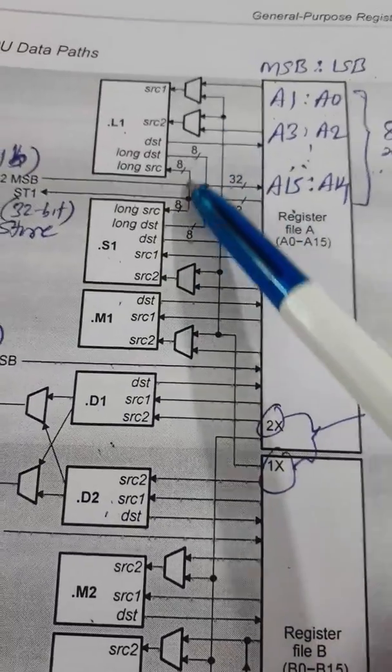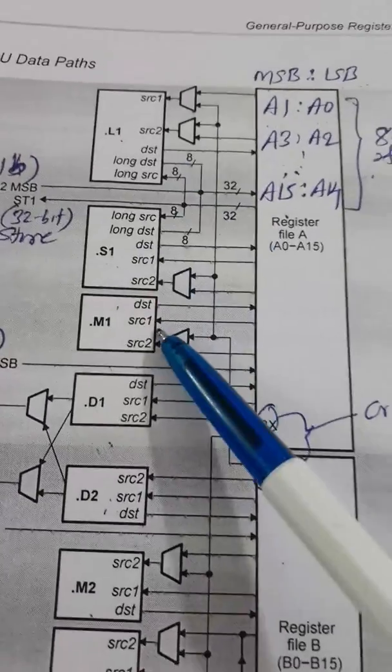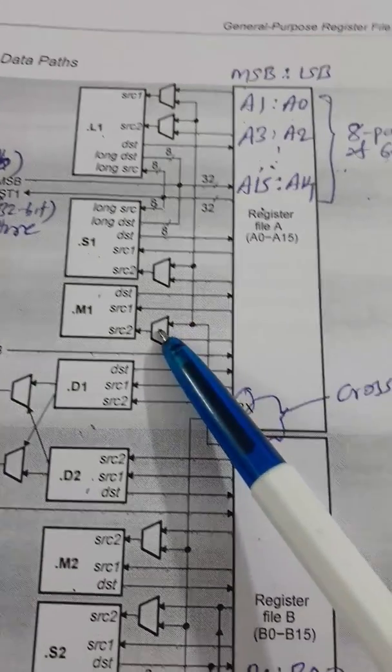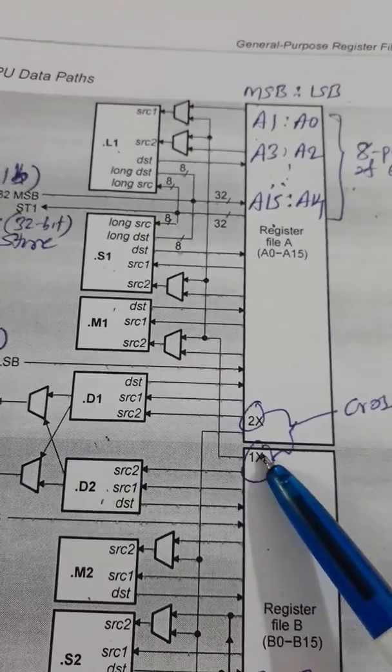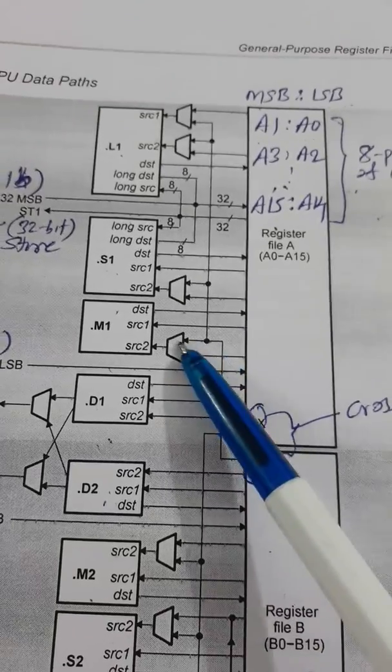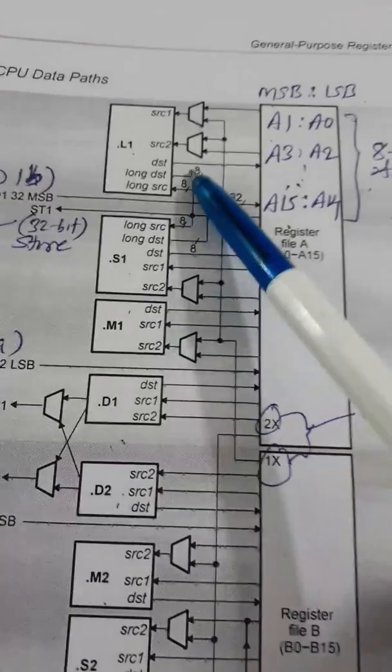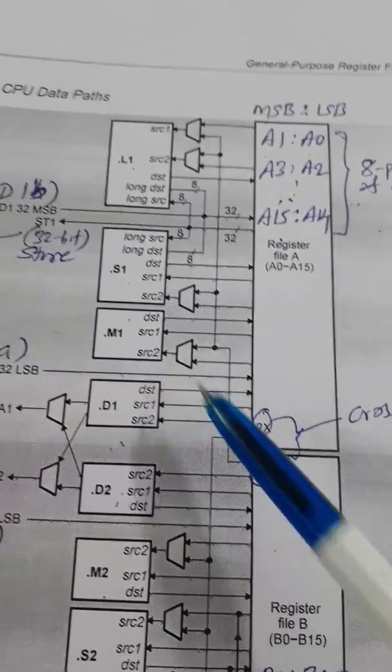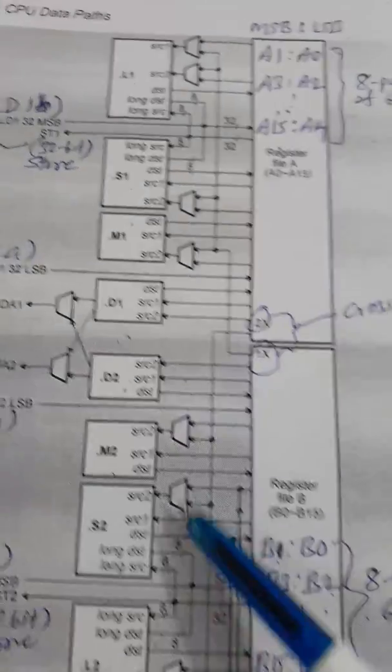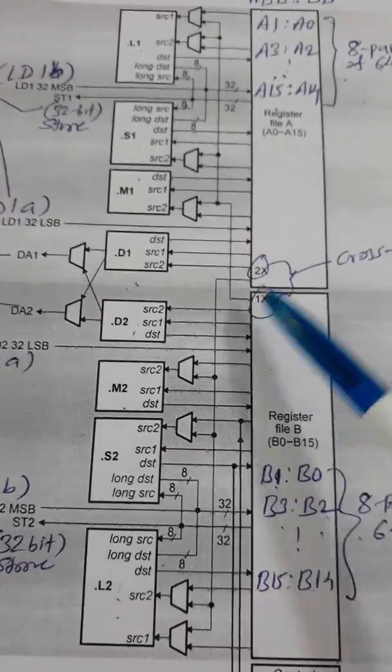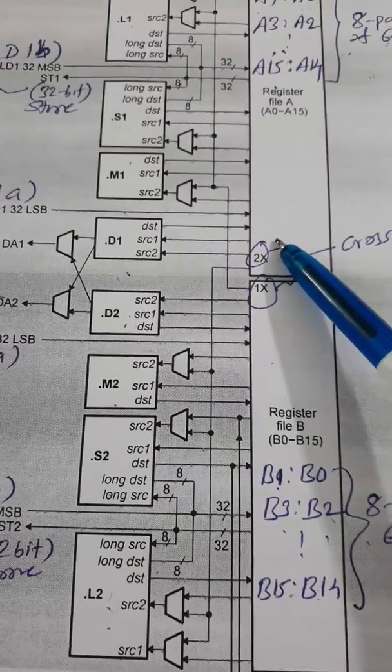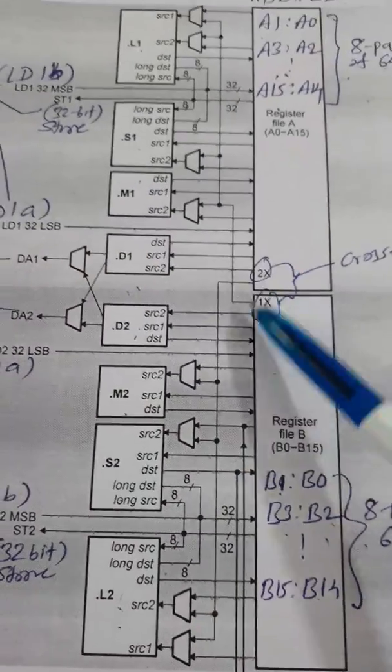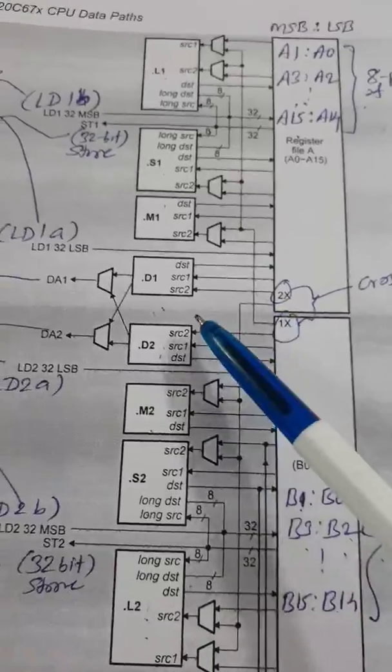But when they access to the cross paths, then only one at a time, one of these four units, or three units, can access one at a time only. So in one cycle, only one cross path or one data can be accessed at a time. So not all the three units can do simultaneously, but any one of them. Similarly, in the other cross paths, any one of the units can access to these cross paths. So at the most, two of the units can have access to the cross paths at a time.